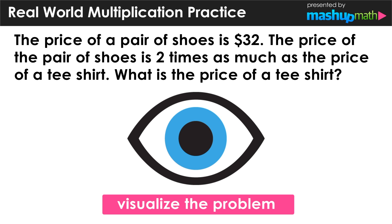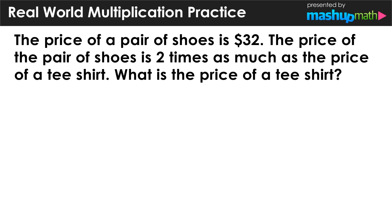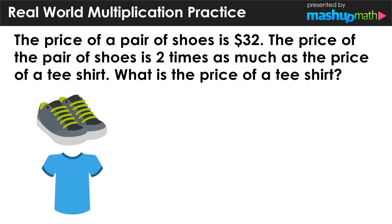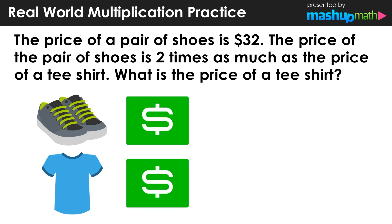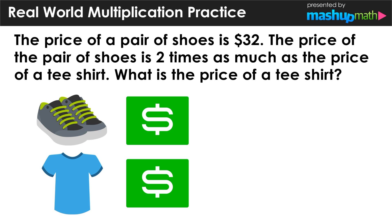So we have two items in question here. One is a pair of shoes, and the other is a t-shirt. And we know that both of these items cost money — they both have some dollar amount, which we can express symbolically. Now, we also know that the price of the pair of shoes is $32, but we don't know what the price of the t-shirt is. That is what we're going to try to find.